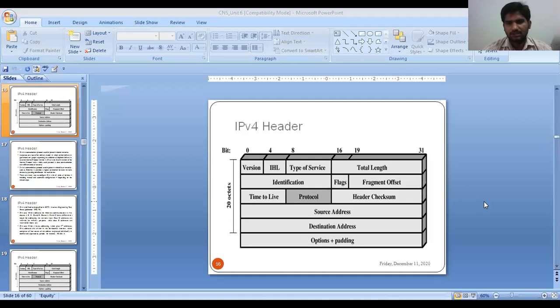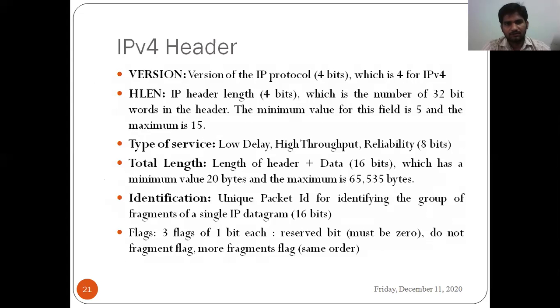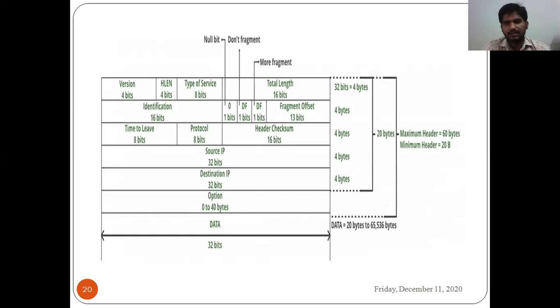There are two types of IP: IPv4 and IPv6. This morning we saw about IPv4 — its header format and how bits are allocated for each piece of data in the network. The diagram shows each segment and how many bits are allocated, as illustrated in the figure.